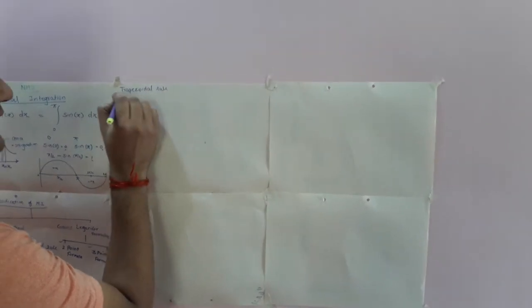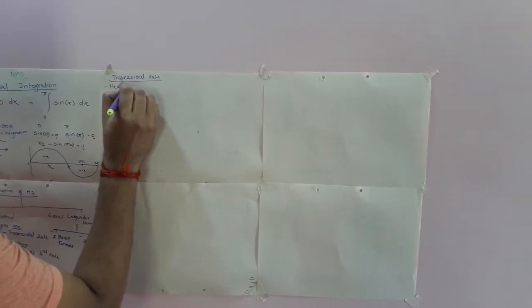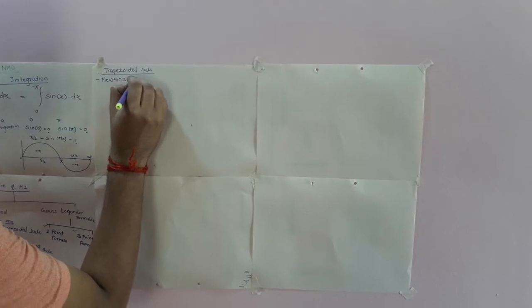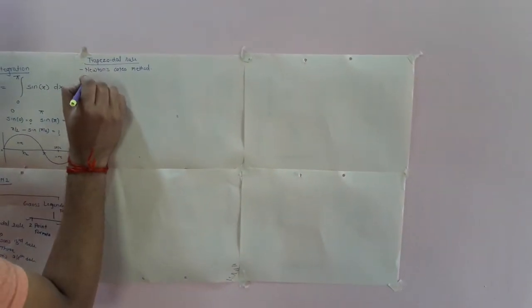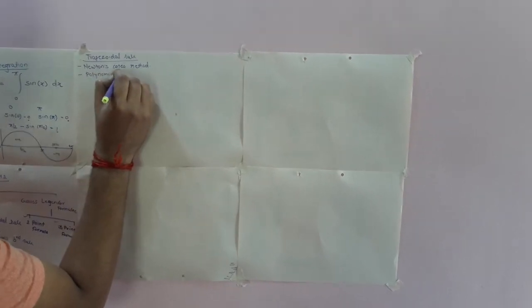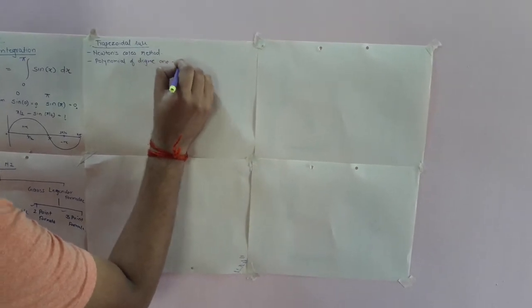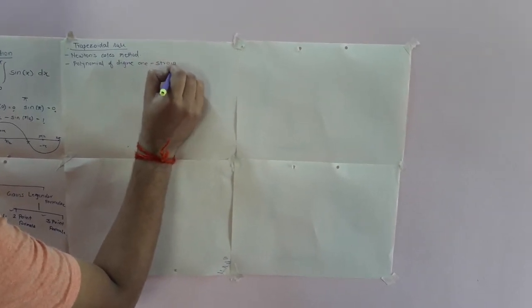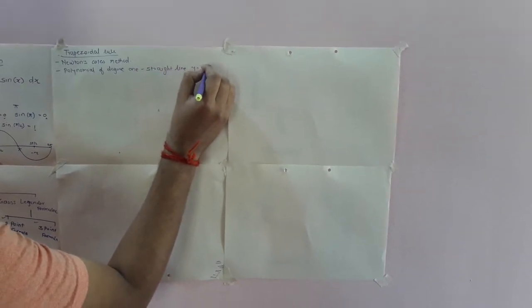About this method, first I can say it is Newton's-Cotes method. Secondly, it is used for a polynomial of degree 1. Polynomial of degree 1 means it can be used for a straight line in the form y = ax + b.